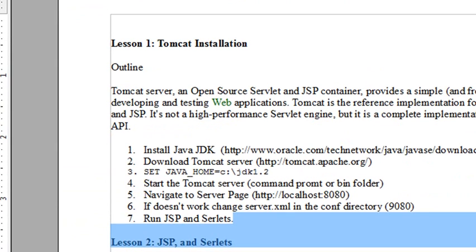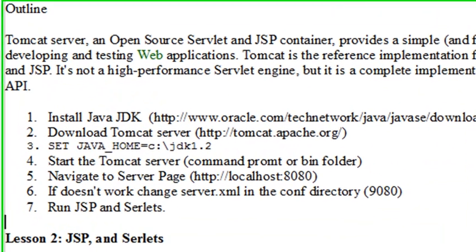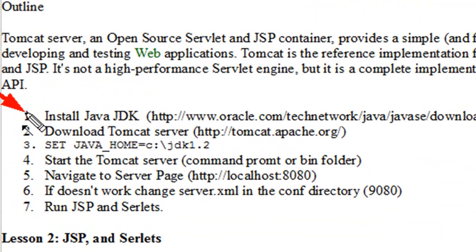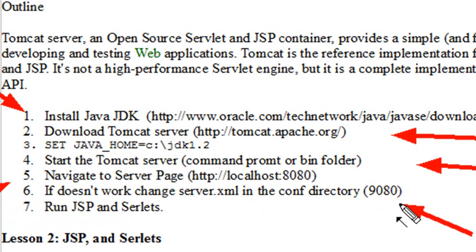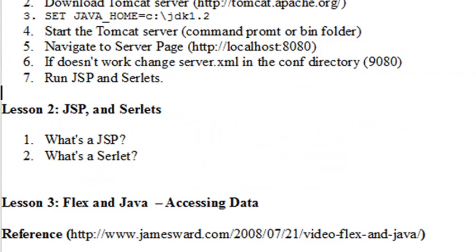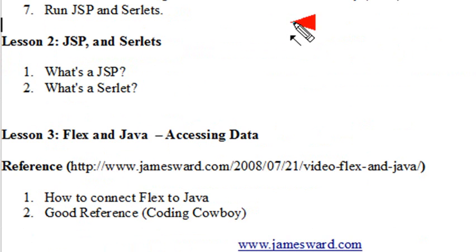Let's go over the steps real quick — it's actually very simple even though it may take a little bit of time. Go ahead and download the JDK, install it, and make sure you know the path. Then grab your Tomcat server, unzip it, and put it somewhere. Make sure you set your Java home path. Start it up using the startup command in the bin folder, and navigate to localhost 8080. If that doesn't work, change the config file to 9080 using server.xml. Then run a few JSP and servlet pages to make sure they're working. Next time we'll write JSP and servlet pages and also revisit JavaFX.